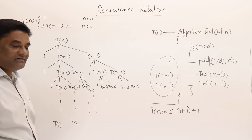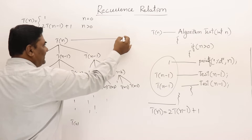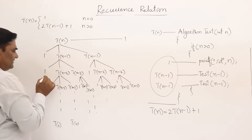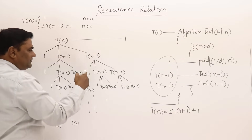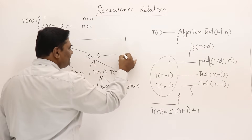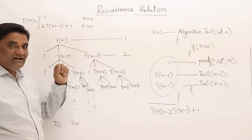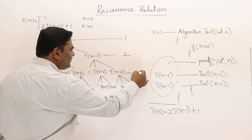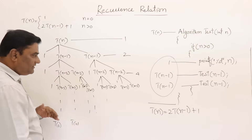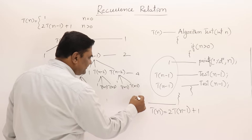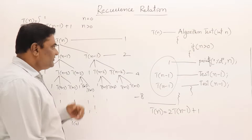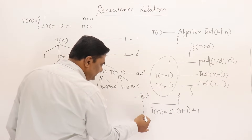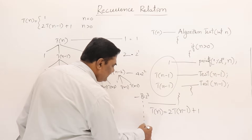Now let us find out the time. At the first step it is taking one unit of time. At the next level, two nodes each take one unit — that is 2. Then four nodes each take one unit — that is 4. So the levels give 1, 2, 2², 2³ and so on. If I write this out: 1, 2¹, 2², 2³ — this will go on for k times, giving 2^k nodes at level k.